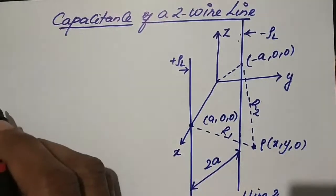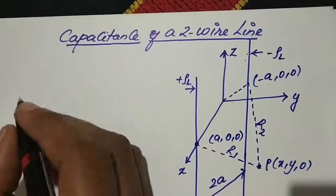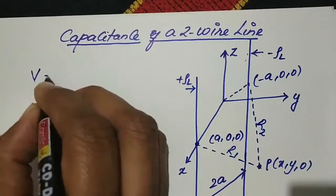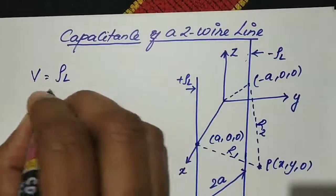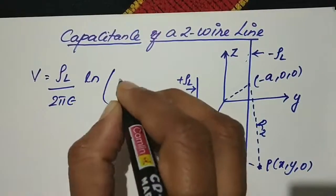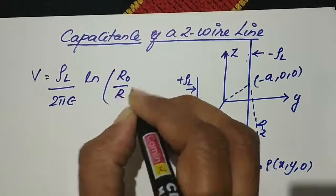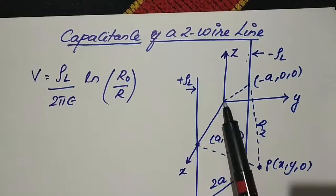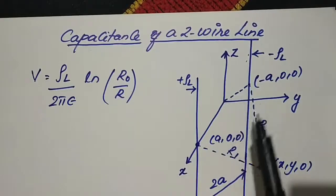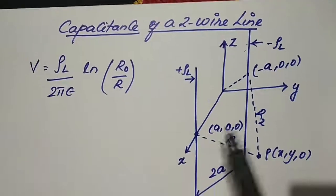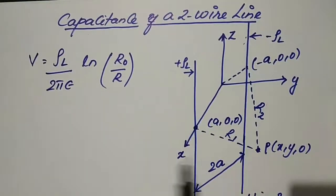As already seen in the previous lectures, the voltage difference for an infinite line is given by V = (ρl / 2πε) × ln(r0 / r), where r0 is the reference point at equal distance from line r2 and line r1.